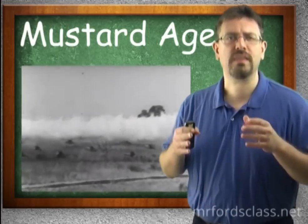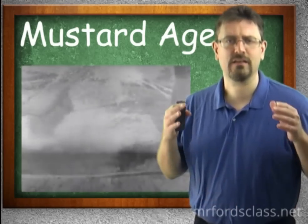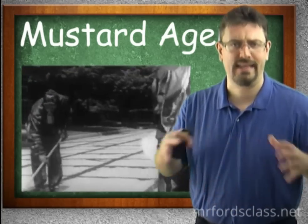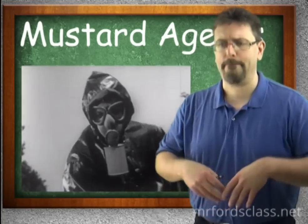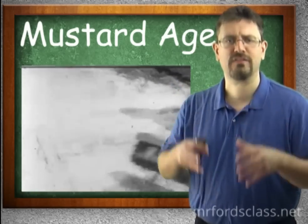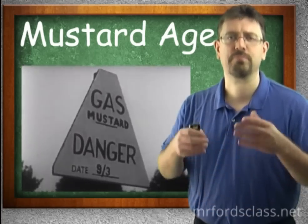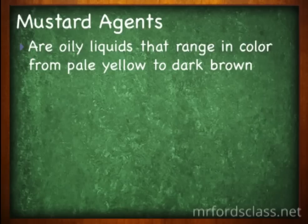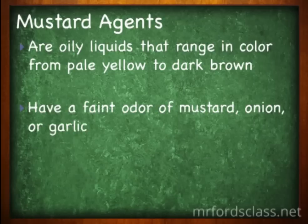Mustard agents are the most common of the blistering agents. In fact, every nation state — the U.S., Australia, England, France, Russia — that has produced weapons like this has produced sulfur mustard. Mustard agents are oily liquids that range in color from very pale yellow to dark brown depending on the type and purity. There's also a faint odor of mustard, onion, or garlic. These liquids evaporate very quickly and their vapors can also cause injury.